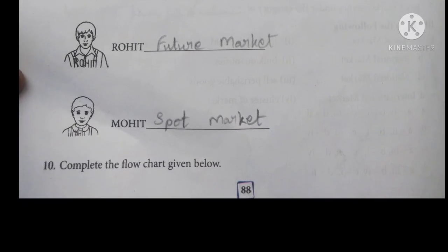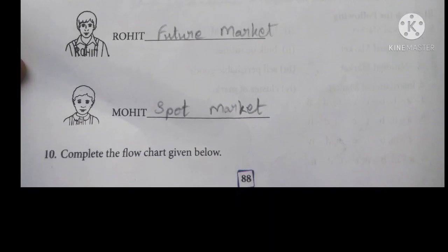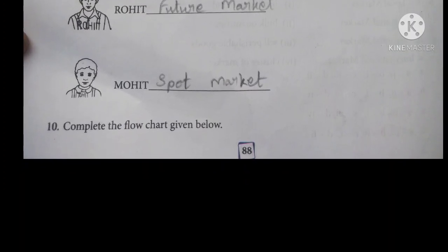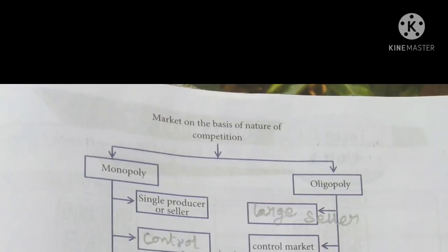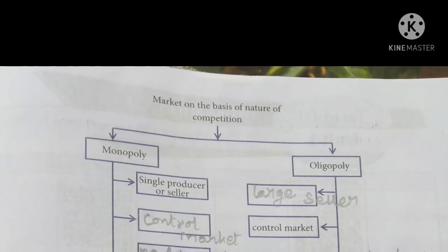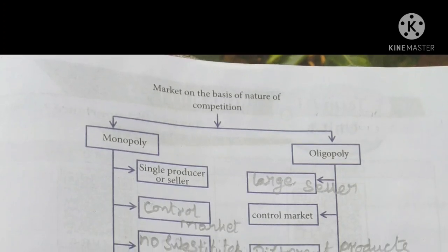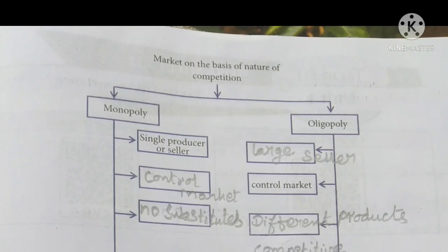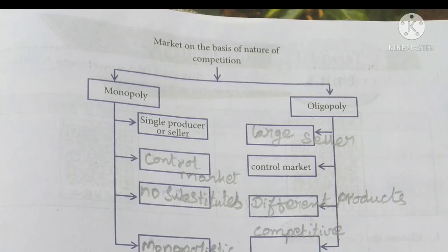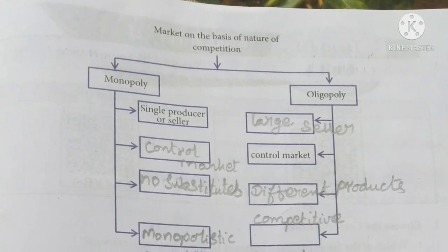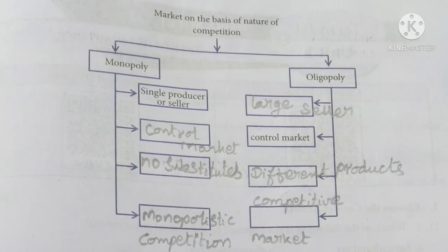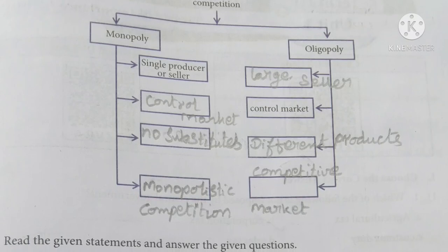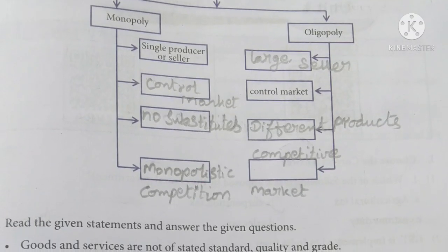Complete the flow chart given below. Monopoly and Oligopoly are the two types of market competition. In a Monopoly, there is a single producer or seller who controls the market, no substitute products are available, and there is only stiff competition. In an Oligopoly, there are a few largest sellers who control the market, different products are sold, and they have a competitive market.